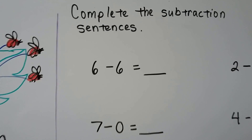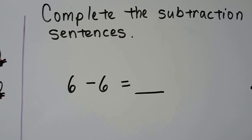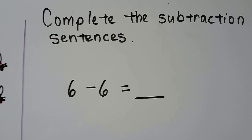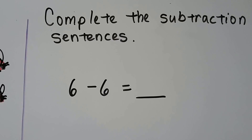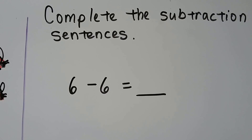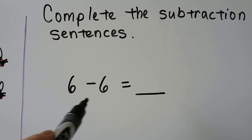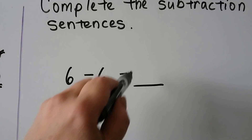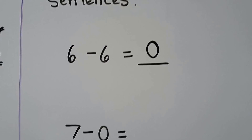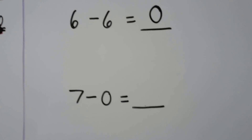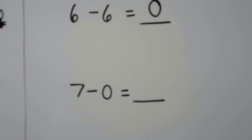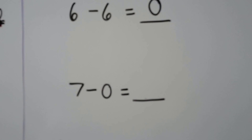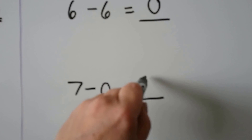We can complete the subtraction sentences. When you take all, zero are left. Six minus six equals zero. Seven minus zero — when we subtract zero, the number stays the same — it's going to stay seven.